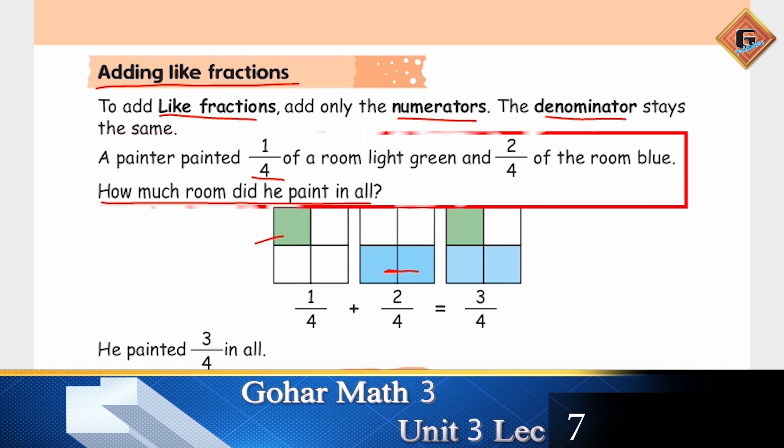Let's write one over four and we are going to add it to two over four. Four stays the same and one plus two is three. He painted three over four in all.